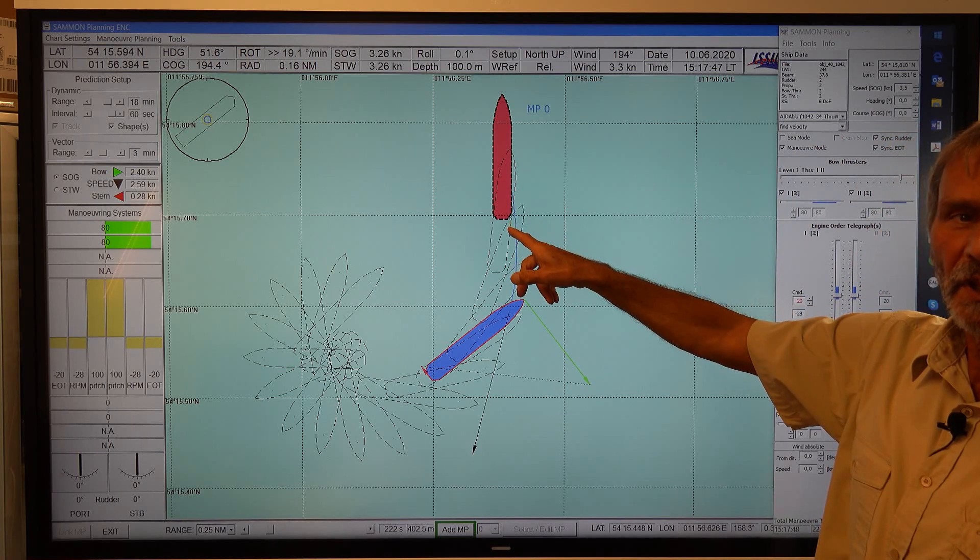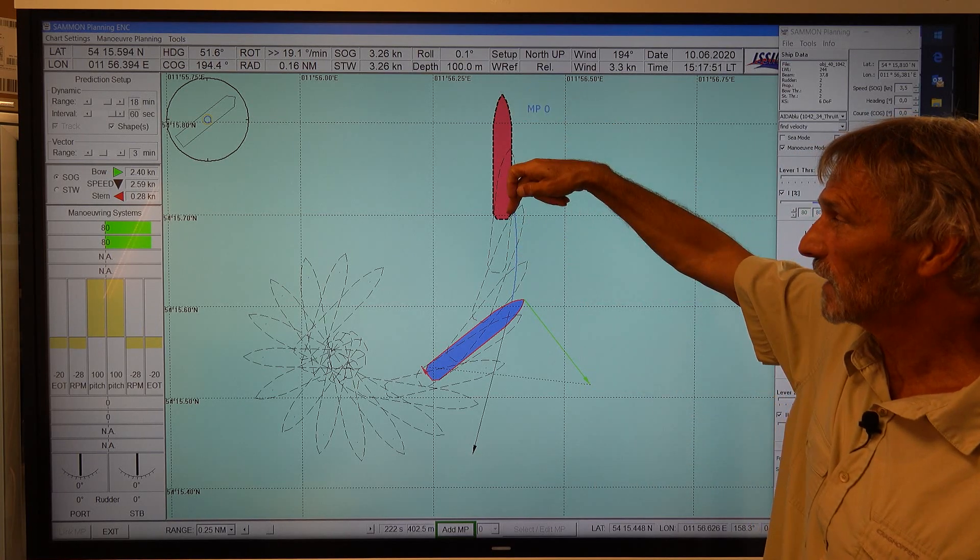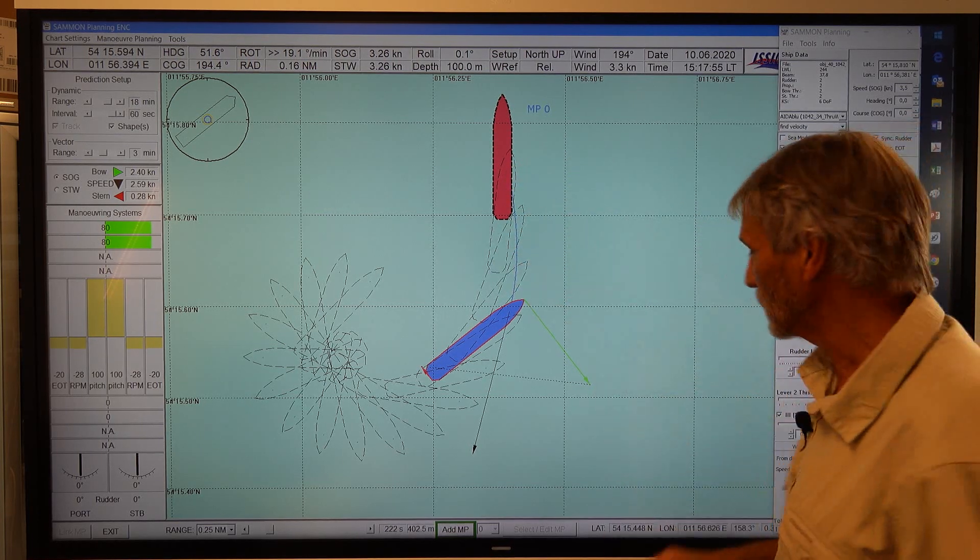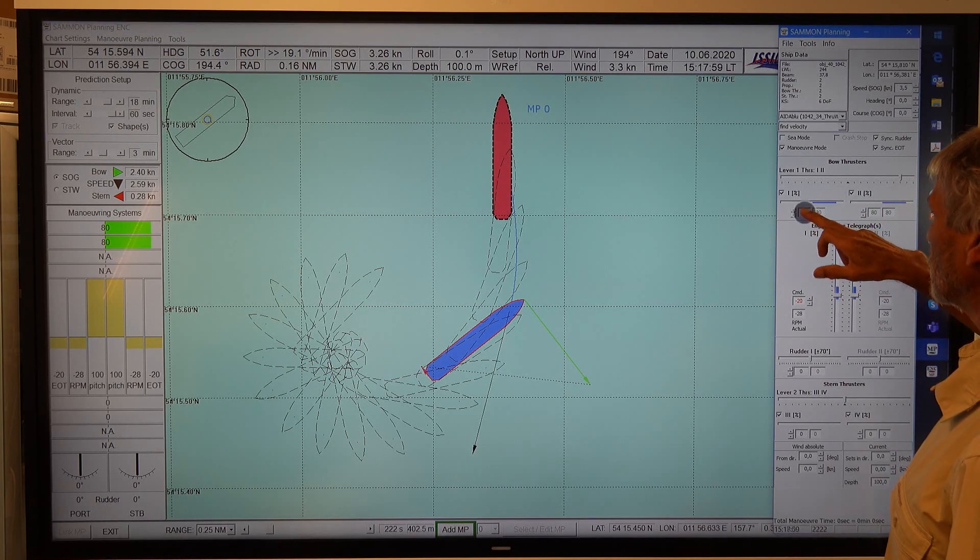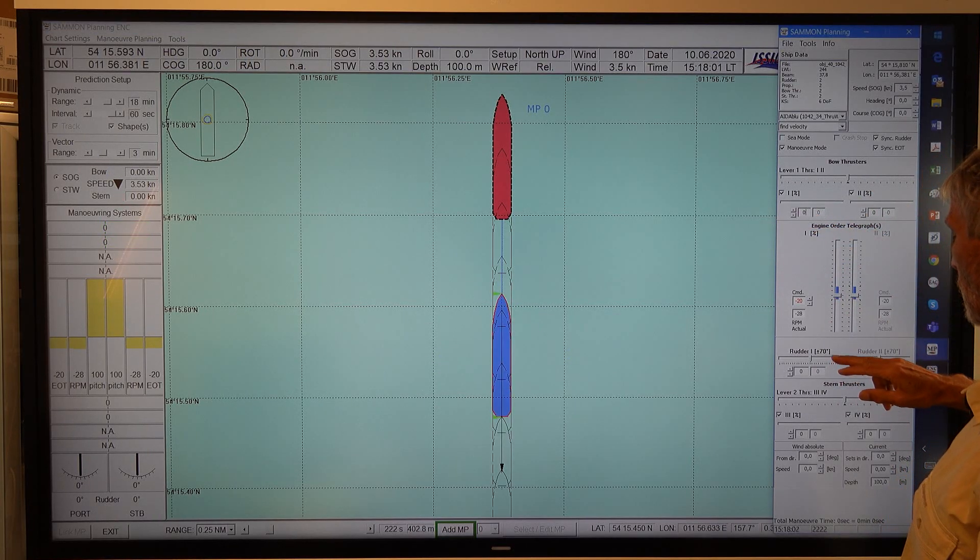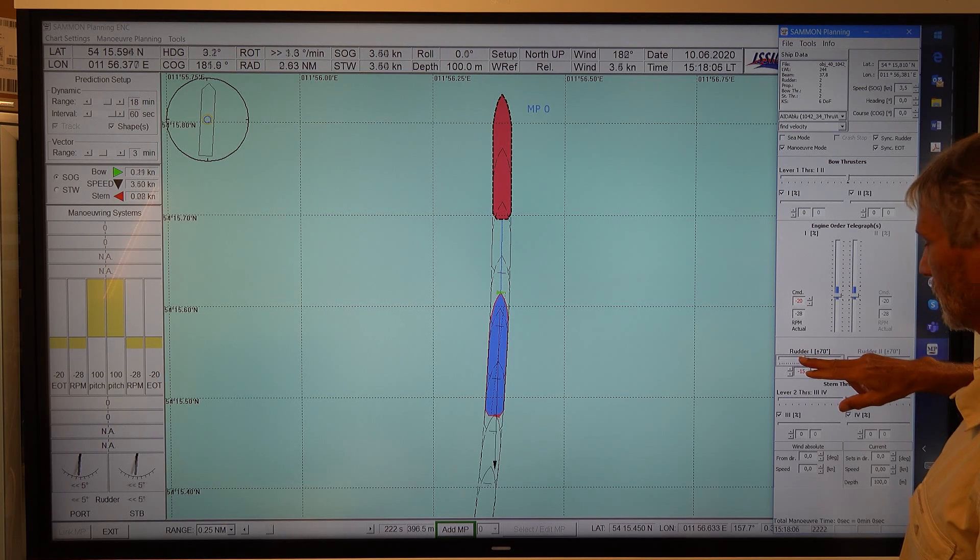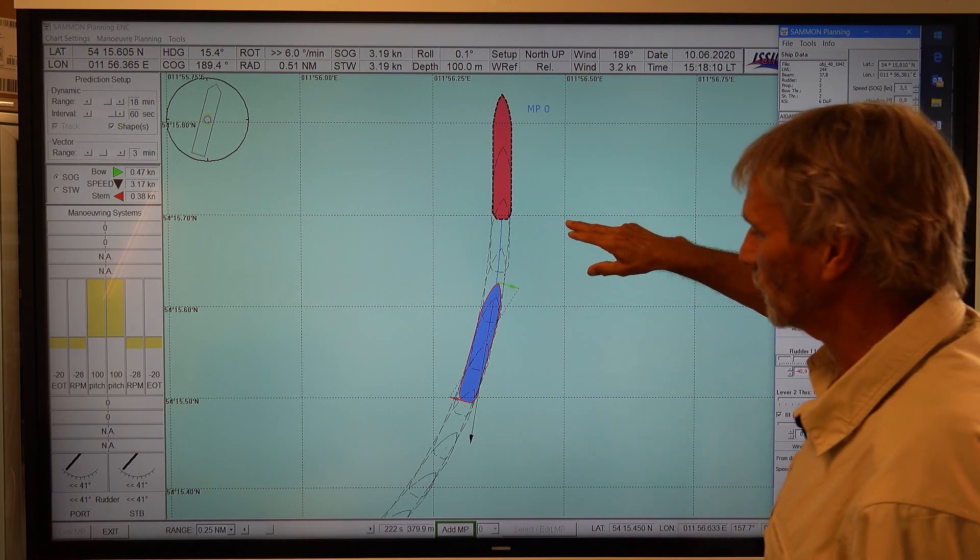But what would the rudder mean if I use instead of the bow thruster, I use now the rudder which is now going in front of the part. So I switch off the thruster and instead I use the rudder pointing now in this direction. So it's now 40 degree.